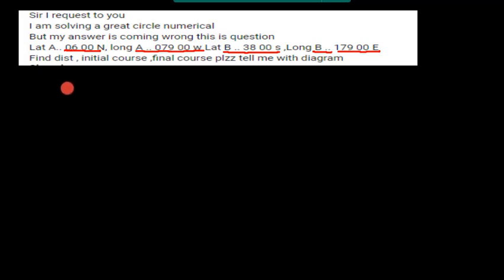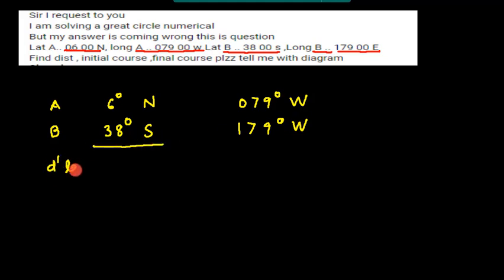So no problem. Let me write the initial latitude A here which is 6 degrees north and longitude 079 degrees west. Now let me write B which is 38 degrees south and this is 179 degrees west. This is the longitude. Okay I think I made a little mistake here. This is not west, rather this is actually east. Now it is corrected, this is east.